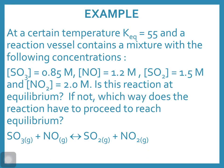For an example: at a certain temperature, K_eq is 55, and the reaction vessel contains SO3 = 0.85 M, NO = 1.2 M, SO2 = 1.5 M, and NO2 = 2 M. Is the system at equilibrium, and if not, which way does the reaction have to proceed to reach equilibrium?